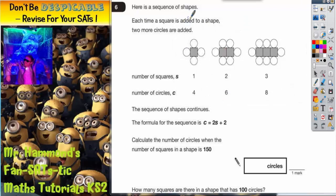Question 6. Here is a sequence of shapes. Each time a square is added to a shape, two more circles are added.